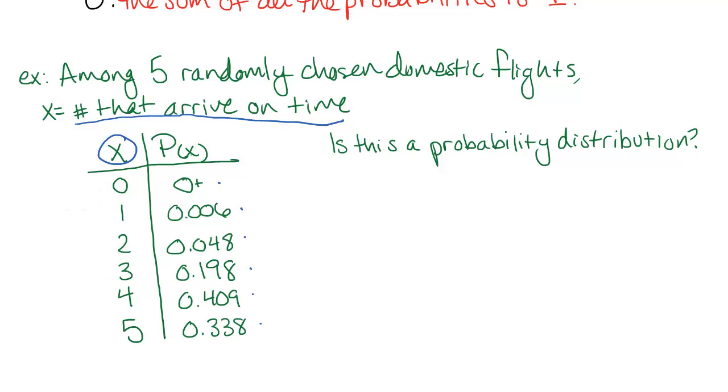Now we look at our probabilities. We have to check and make sure that these are actually between zero and one, and all of them are. So these do make sense as probabilities. And then we would have to check that when we add them all up, we get one.